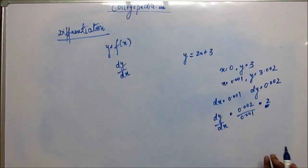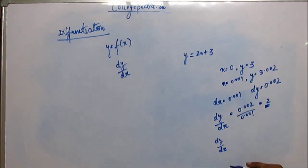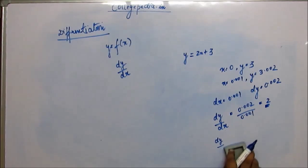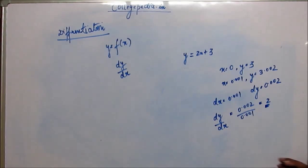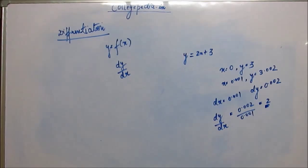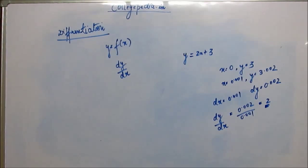This is called differentiation of y with respect to x. Now, y could have been dependent on another independent variable like z. In that case we would write dy/dz — change in y with respect to z. It depends on which variable y is dependent on; with respect to that variable, we can find the differentiation of y. dy/dx is going to be with you as long as you study maths, physics, and chemistry. dy/dx is called differentiation of y with respect to x.